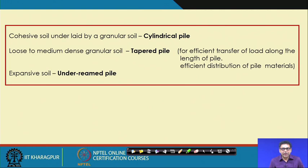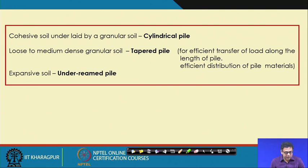The under-rim pile is suitable for expansive soil. If it is loose to medium granular soil, then tapered pile is suitable — it will distribute the load and the material efficiently. For cohesive soil underlaid by granular soil, cylindrical pile is suitable.